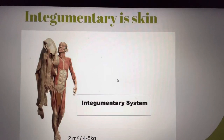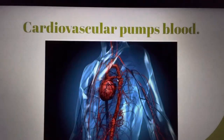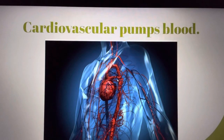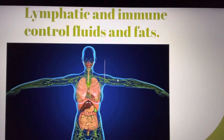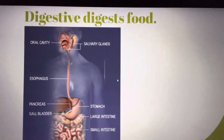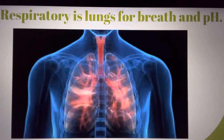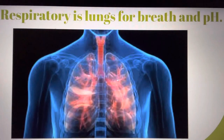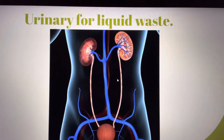Integumentary is skin. Cardiovascular pumps blood. Lymphatic and immune control fluids and fats. Digestive digest food. Respiratory is lungs for breath and pH. Urinary for liquid waste.